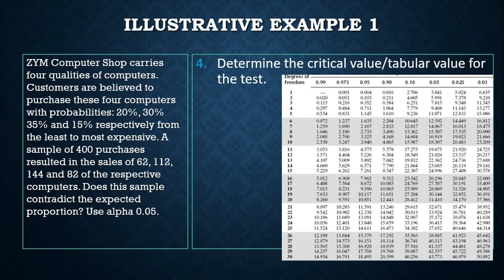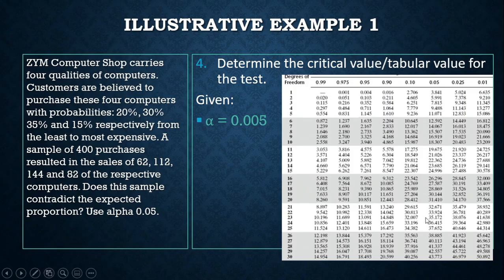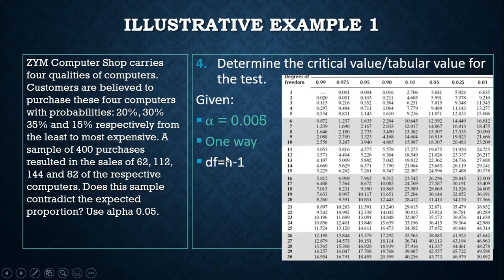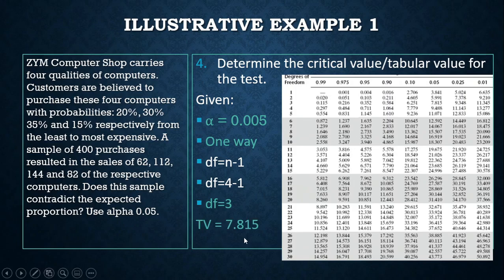For the critical or tabular value, our alpha is 0.05. For the degree of freedom in a one-way classification, it is simply n minus 1, where n represents the number of data items or proportions. We have 4 proportions, so our degree of freedom is 4 minus 1, which equals 3. At 3 degrees of freedom and a 0.05 level of significance, our tabular value is 7.815.